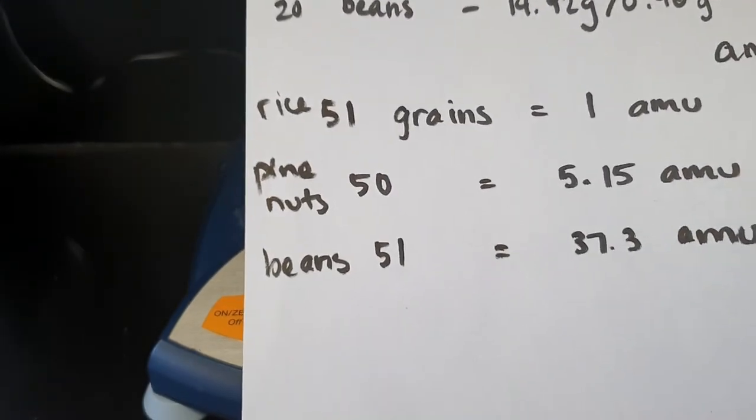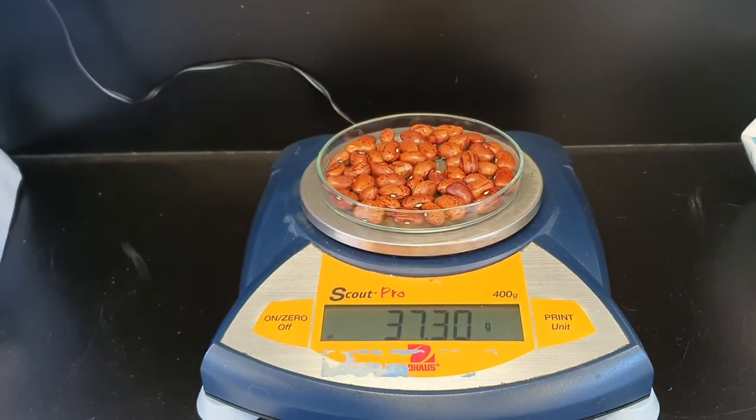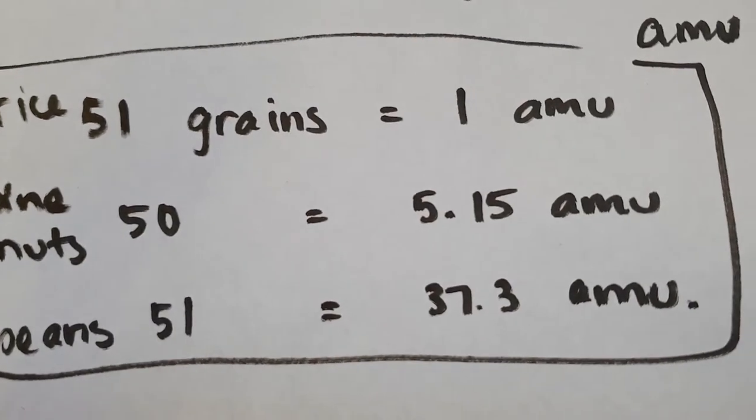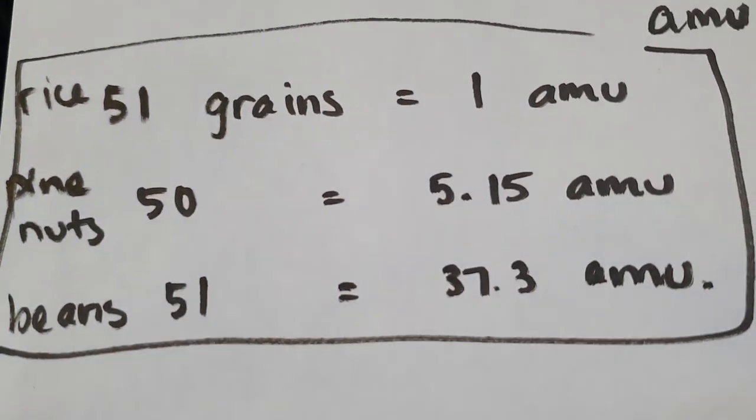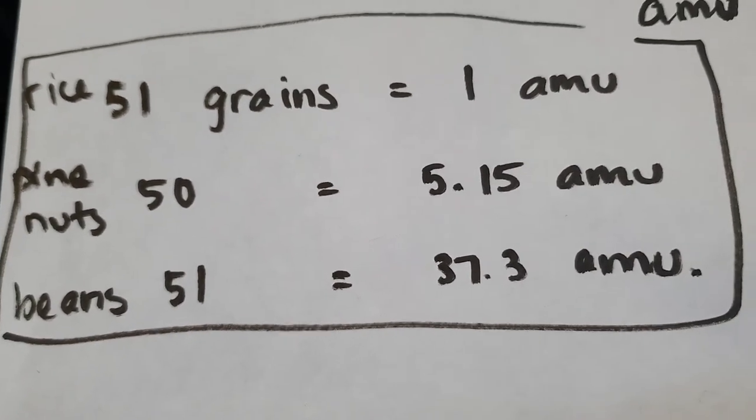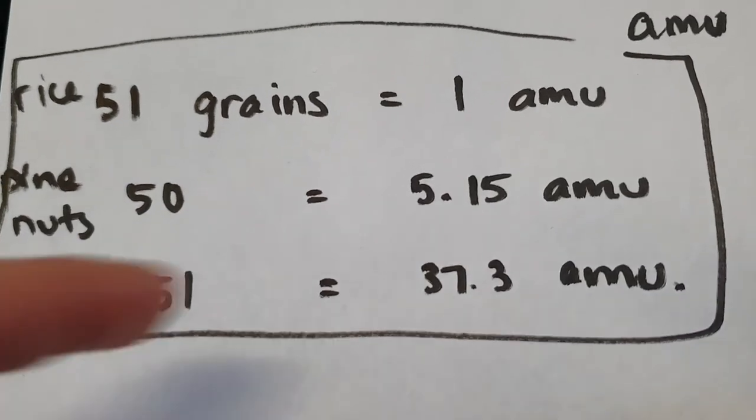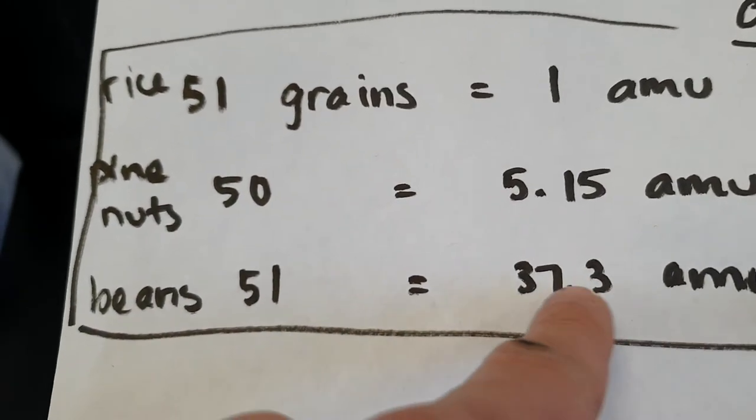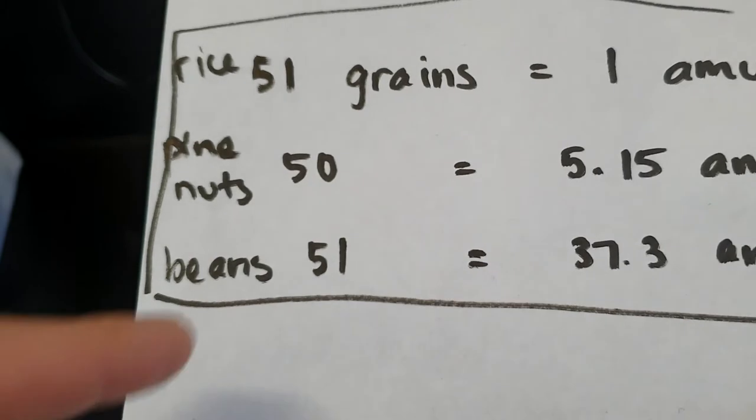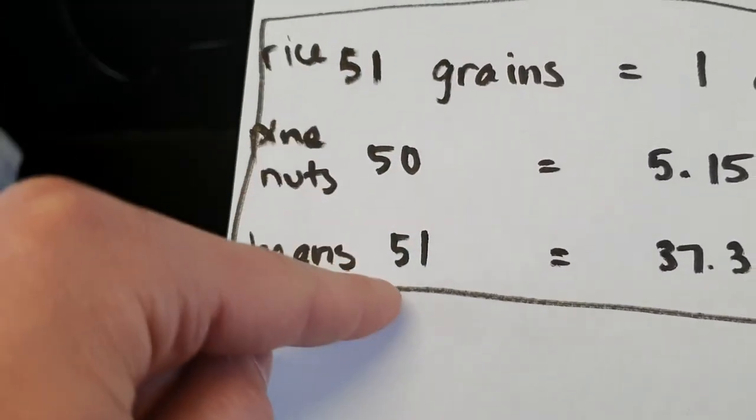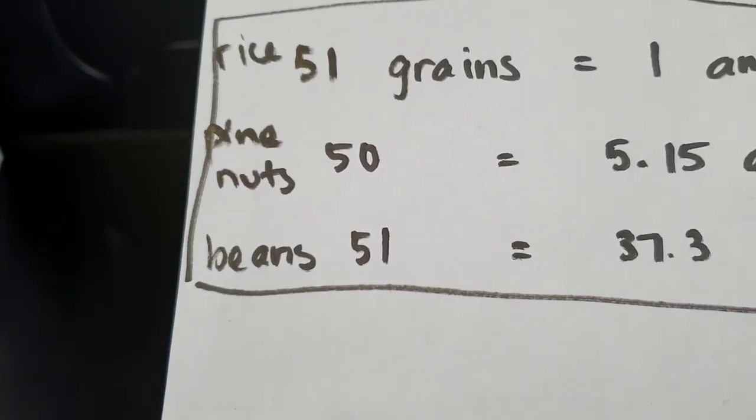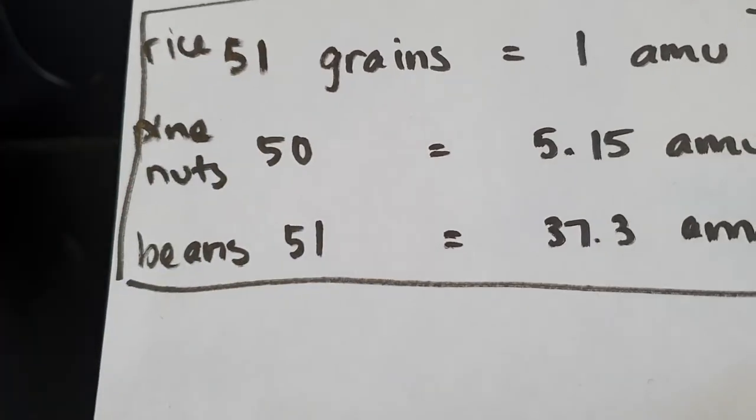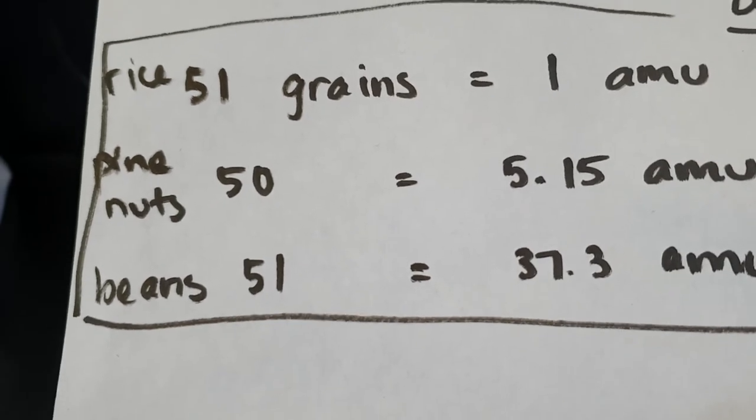So I just want you to have a look at those numbers there. So to get to one atomic mass unit, we required 51 grains of rice. To get to 5.15 atomic mass unit, which is of the pine nuts. That's the atomic mass unit of the pine nuts. We needed 50 to get to the atomic mass unit of the beans. 37.3. We needed 51. If you have a look at these values, they are essentially the same. Plus the one pine nut. So that's our little anomaly.